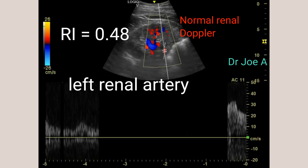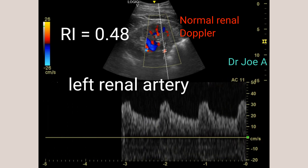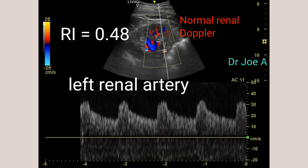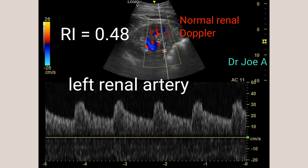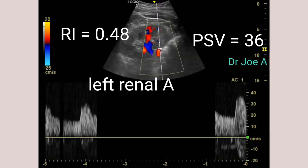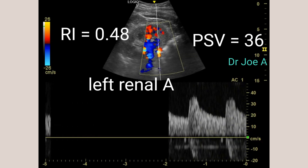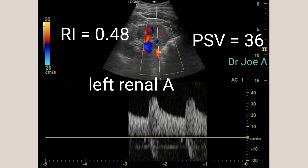This is an adult male patient who presented with hypertension. Renal Doppler was performed, which turned out to be normal. Color Doppler ultrasound showed no significant abnormalities in the renal arteries, indicating normal blood flow patterns and absence of any stenosis or obstruction.